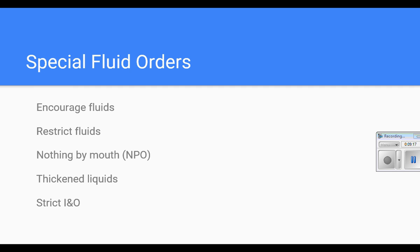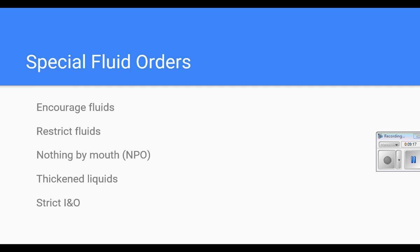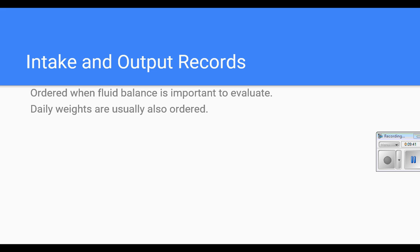Intake and output records are ordered when fluid balance is important to evaluate. Daily weights may also be ordered because weight is a very sensitive indicator of fluid balance. If a patient gains a pound a day, that's generally not because of what they ate — it generally is because of fluid.